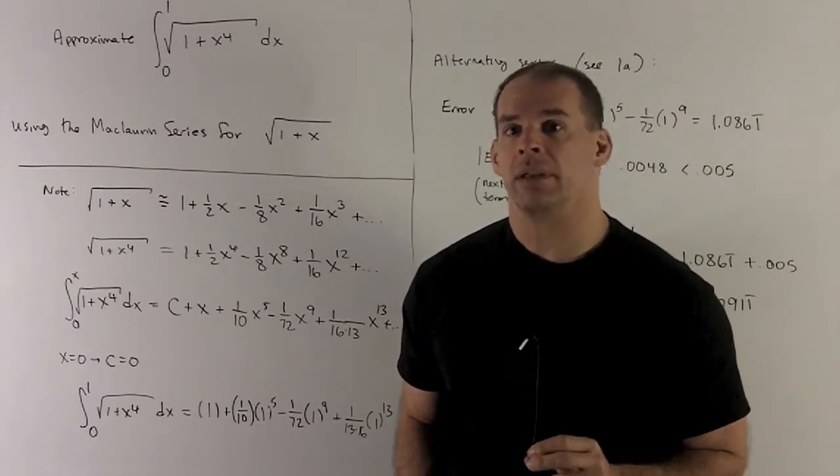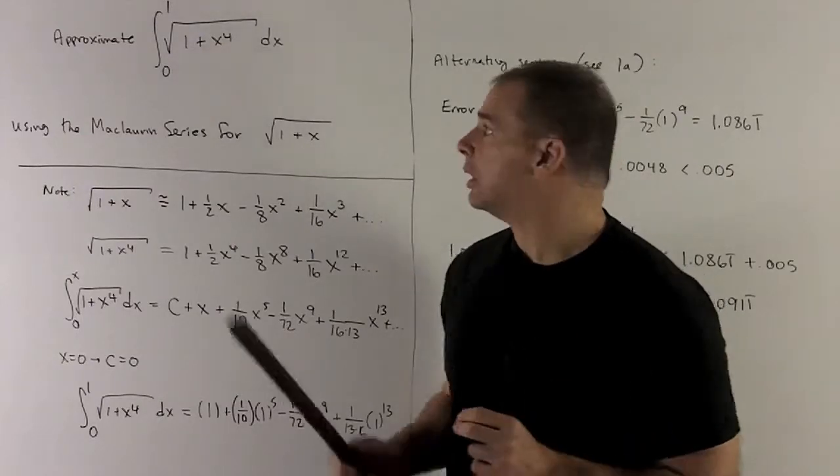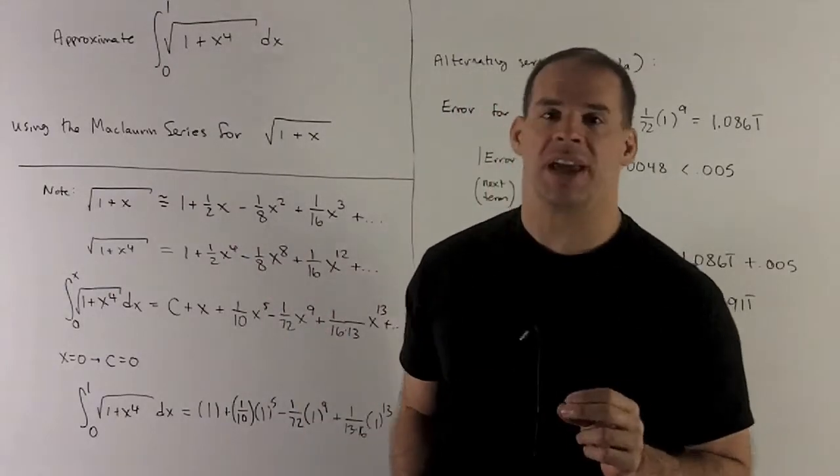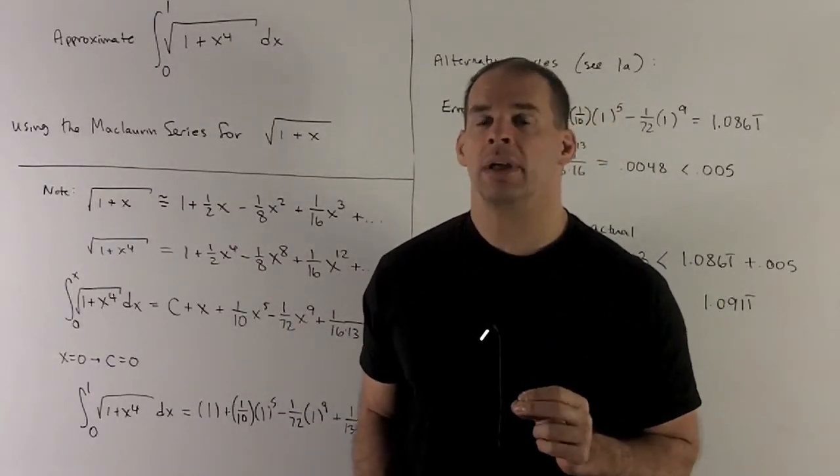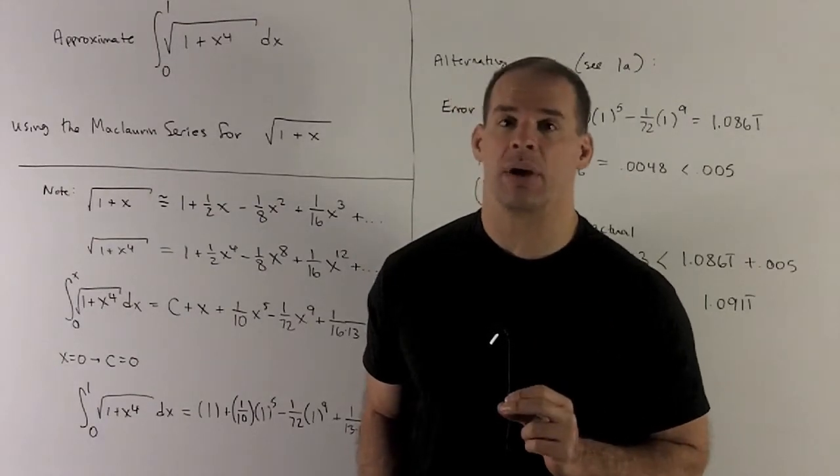We're going to do this using the Maclaurin series for square root of 1 plus x. Now, no matter what we try to do with this, we're not going to be able to find a nice anti-derivative in closed form, so what we're going to have to do instead is, just to get a number, use power series to get an approximation.